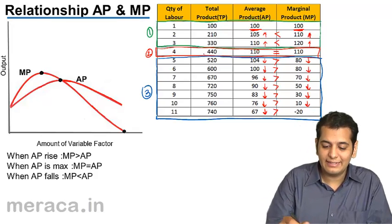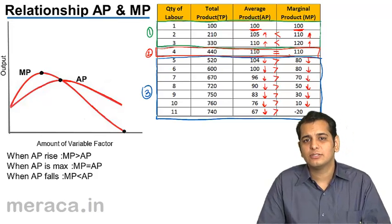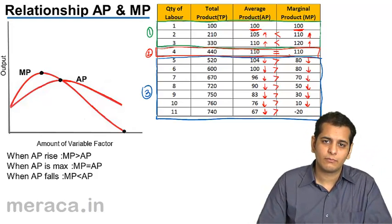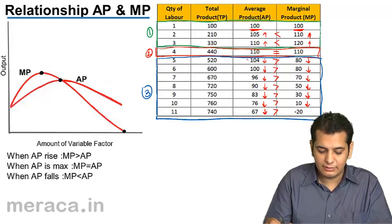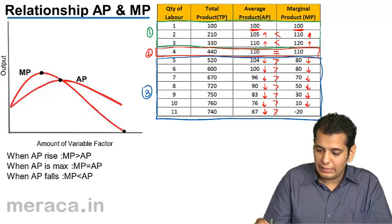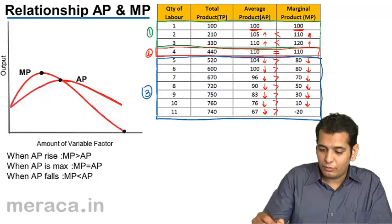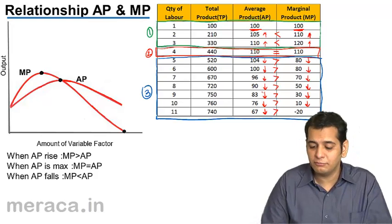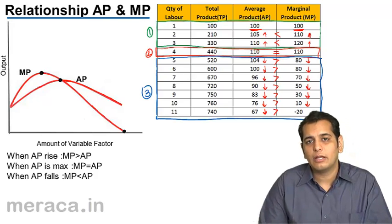At the second level, when both are equal. Now, what happens is, after a point, there comes a stage where both become equal. So that is the stage where you can see that the AP is maximum. In all these numbers that you have in the AP column, you can see that AP is maximum when it is equal to MP.